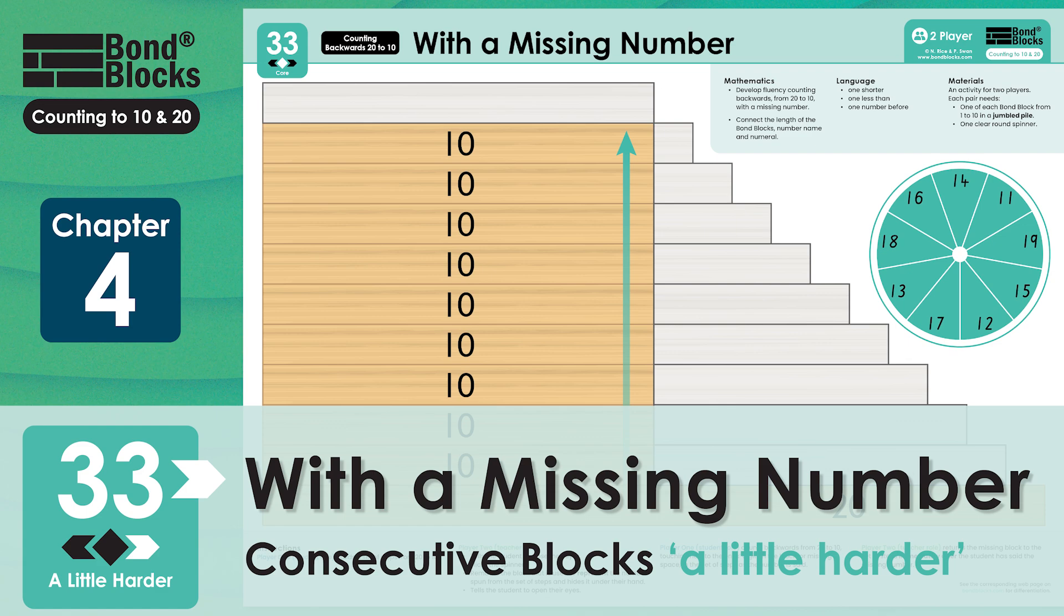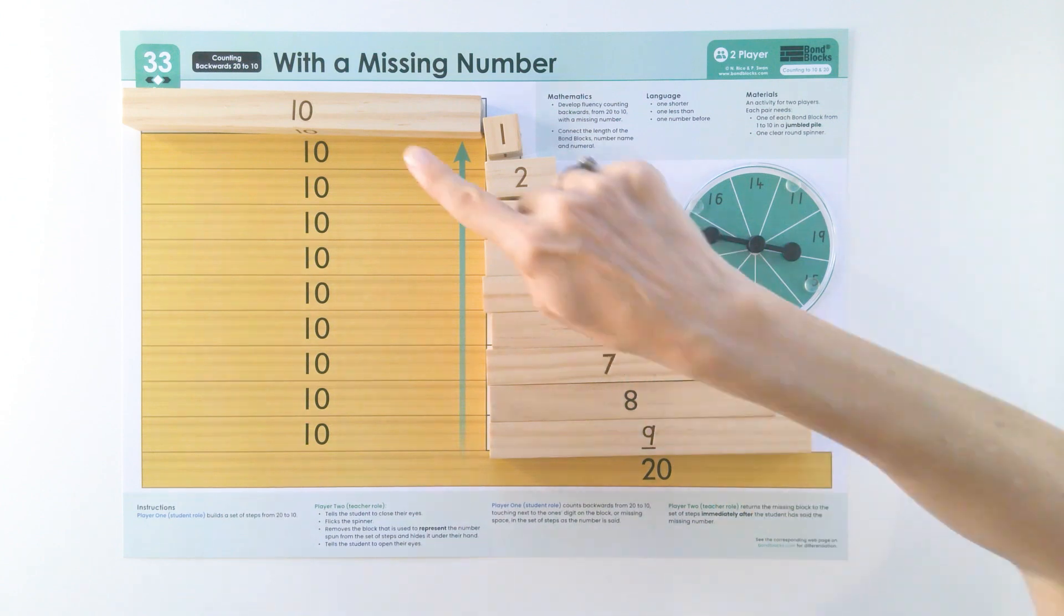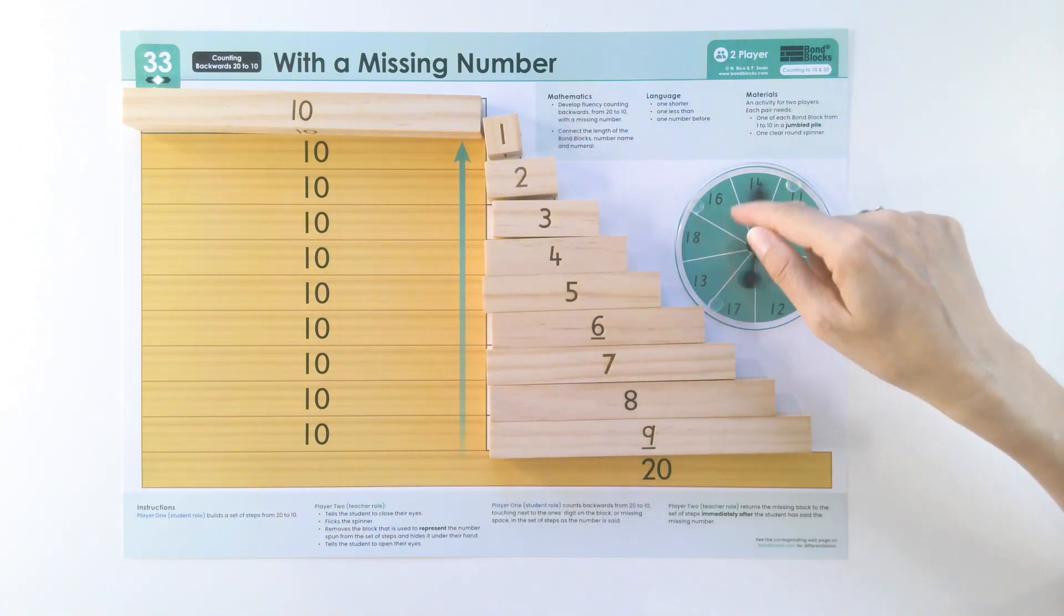Welcome to activity 33, a little harder. We're going to be counting backwards from 20 to 10 with two missing numbers, but we're only going to flick the spinner once.